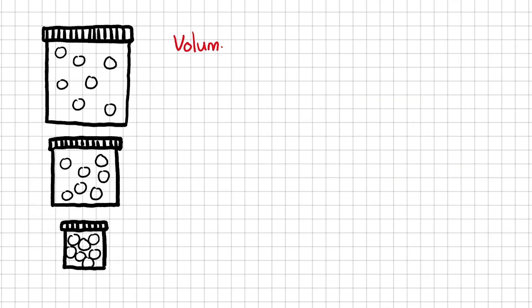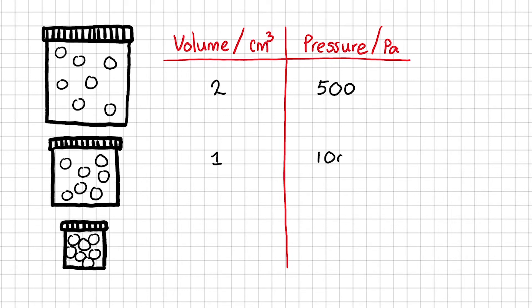Let's take some readings with these three containers side by side. This container has a volume of 2 cubic meters, and using my pressure gauge, I measure a pressure of 500 pascals. This container has a volume of 1 cubic meter, and the gas exerts a pressure of 1000 pascals. The volume of this container is 0.5 of a cubic meter, and pressure is 2000 pascals.